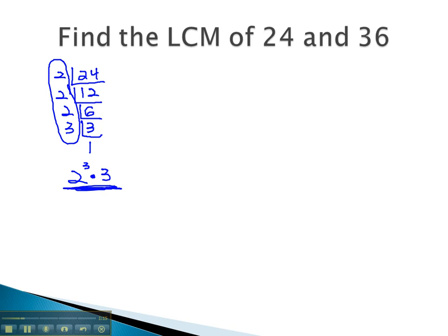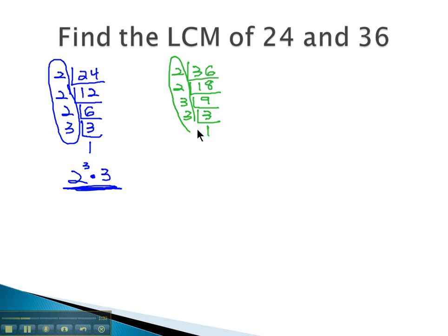We then can find the prime factorization of the other number, 36, which is divisible by 2, giving 18, which is divisible by 2, giving 9, which is divisible by 3, giving 3, and divisible by 3 once. The prime factorization is 2 squared times 3 squared.